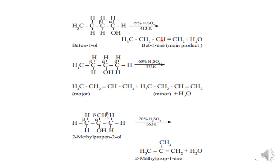For butanol-2, the alpha carbon atom has two beta carbon atoms. The major product is but-2-ene, where the beta hydrogen is eliminated from the carbon with more substituents. The minor product is but-1-ene. Similarly, for 2-methylpropan-2-ol, the alpha carbon atom has all three beta carbon atoms attached to it. Hydrogen can be released from any of them to give 2-methylprop-1-ene along with a water molecule.